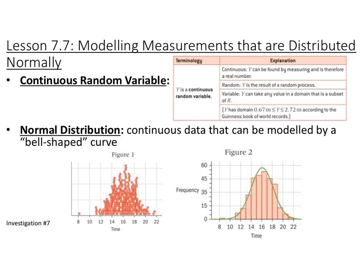Section 7.7 is about modeling measurements that are distributed normally. In 7.5 and 7.6 we talked about discrete random variables. Now we're going to talk about continuous random variables. The only difference is we're now talking about continuous data — data found by measuring as opposed to being counted. It's still random, the result of a random process, and it's a variable that can take any value in the domain.